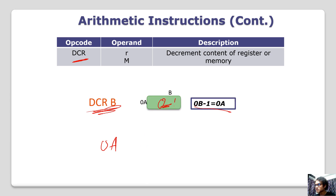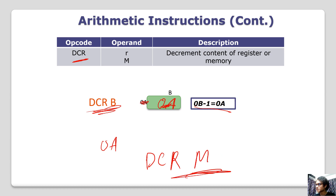0A is the decremented result. DCRM is done using the HL register pair. The value at the memory location is decremented.